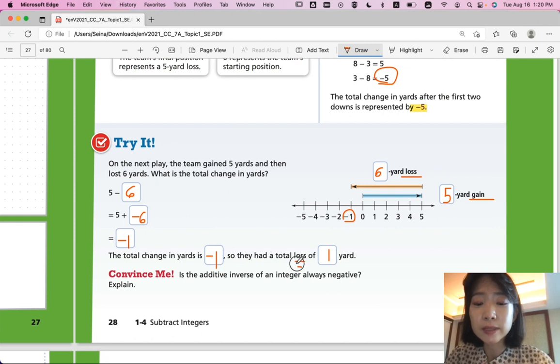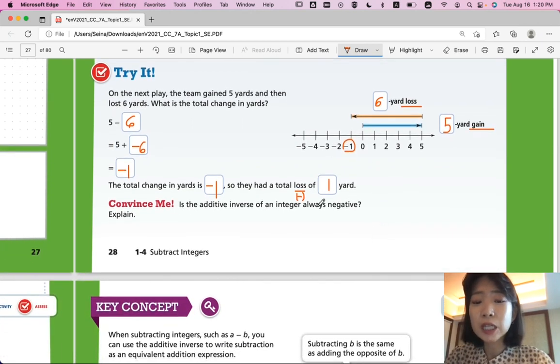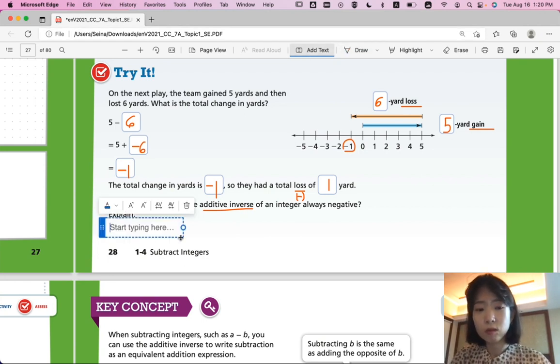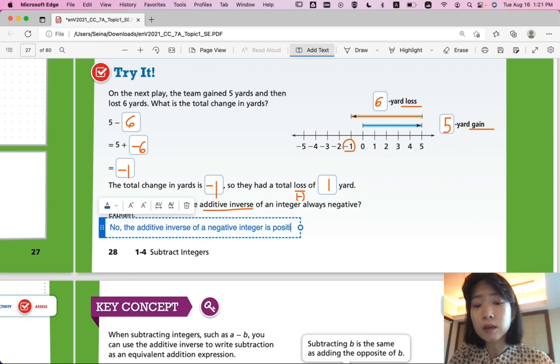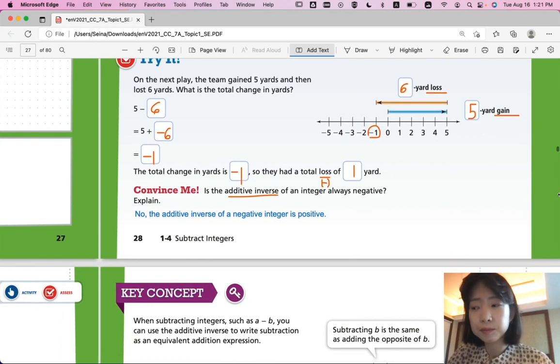So they had a total loss of 1 yard. Loss already represents the negative sign. So you don't have to write negative 1 here. They lost 1 yard. Convince me, is the additive inverse of an integer always negative? What is an additive inverse again? We learned it in the previous lesson. Additive inverses are the opposites. The opposites cancel each other out. They are the same number with opposite signs. So if you add positive 5 and negative 5, you end up with 0. Additive inverses always add up to 0. So no, it doesn't always end up with negative because it's always going to end up with 0. So the additive inverse of a negative integer is positive.